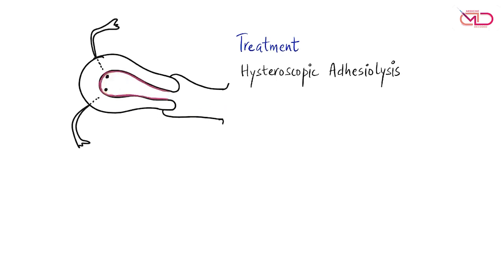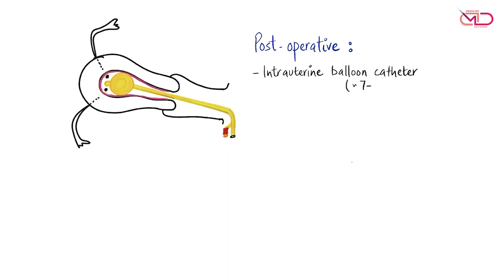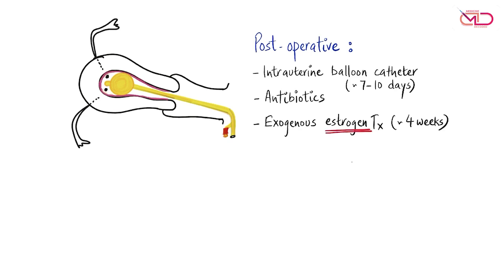After adhesiolysis, adhesions can form again over the raw surfaces of the endometrial lining. This can be avoided by keeping the uterine walls far apart, which is achieved by placing an intrauterine balloon catheter in the post-operative period for about 7 to 10 days. Antibiotics are given at the same time, and exogenous estrogen treatment is given for 4 weeks after the procedure to help build up the endometrial lining.